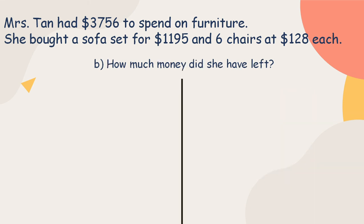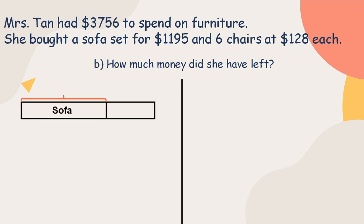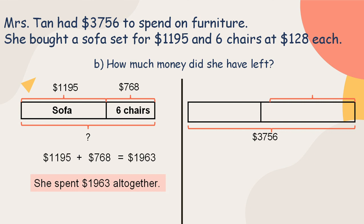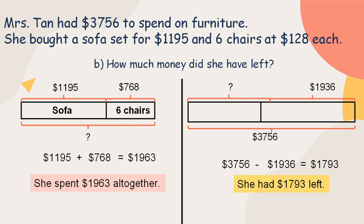Question B: how much money did she have left? Mrs. Tan had $3,756 at first and she spent $1,963 on the sofa and 6 chairs. So you need to subtract: $3,756 minus $1,963 equals $1,793. She had $1,793 left.